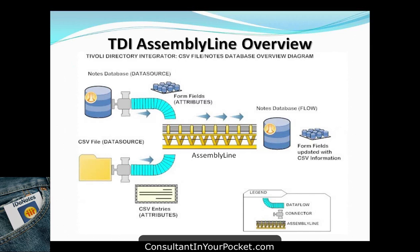We came up with a diagram showing a graphical representation of what Tom is going to do with one of the examples: moving a CSV file and a Notes database and mapping them together in the assembly line. The data source is a Notes database with attributes that are fields on a Notes form, and a CSV file as another data source where records are entries with specific attributes. Each connects via its own connector type to the assembly line, which maps the CSV entries to form fields so the Notes database fields get updated with the CSV information.